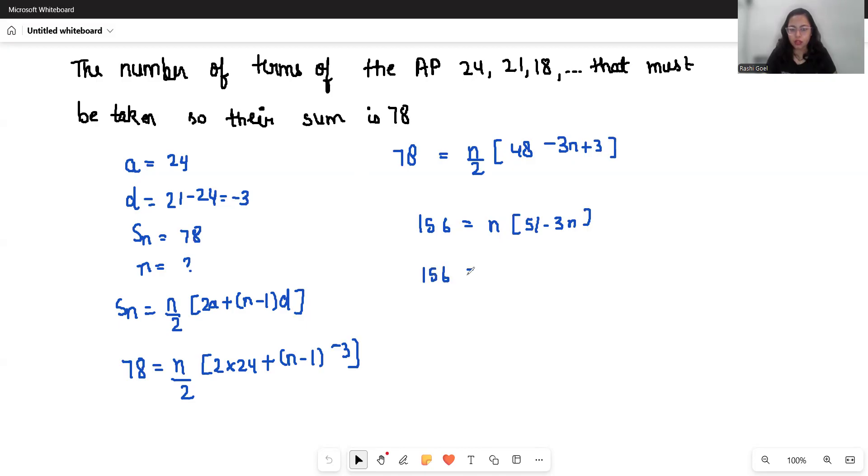So 156 equals 51n minus 3n square. So 3n square minus 51n plus 156 equals 0.